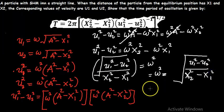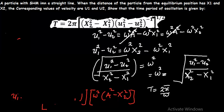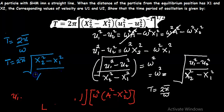Now we substitute omega into our time period formula, which is T equals 2π divided by omega. The time period is simply 2π times the square root of (x2 squared minus x1 squared) divided by (v1 squared minus v2 squared). And this is the result for this problem.